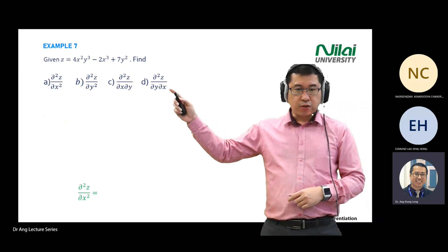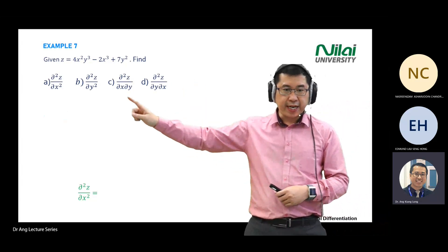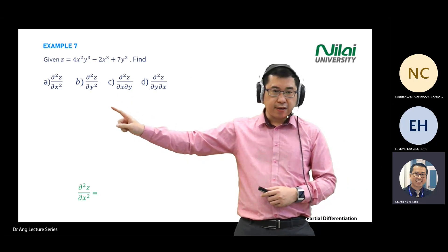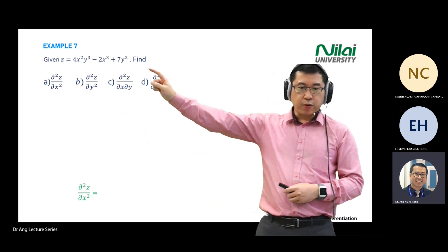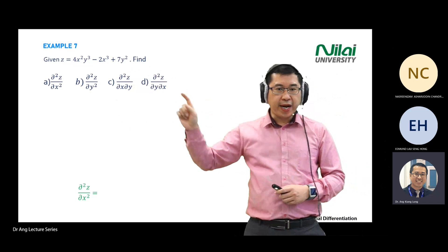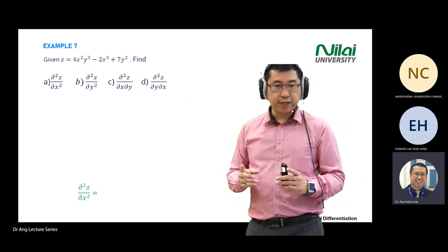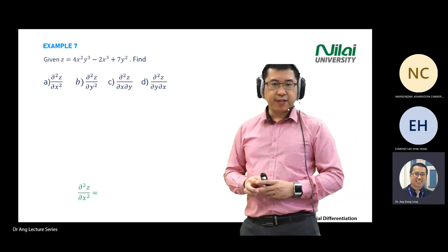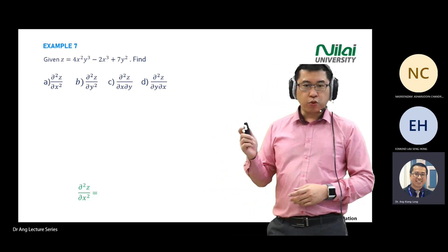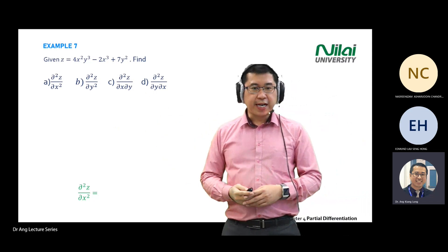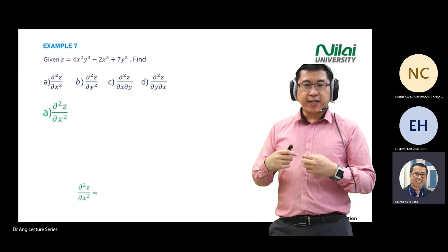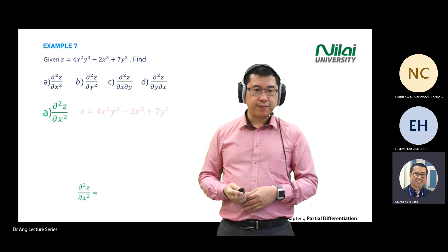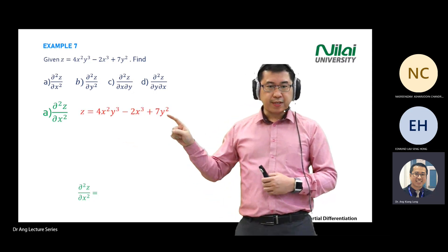As you can see today, our first example has partial differential power 2 of z divided by differential of x power 2. You're given an equation: z equals 4x squared y cubed minus 2x cubed plus 7y squared. So how do you do second-order partial differentiation? It means you differentiate it two times. The question is written in green on the left. You're given z equals this equation.